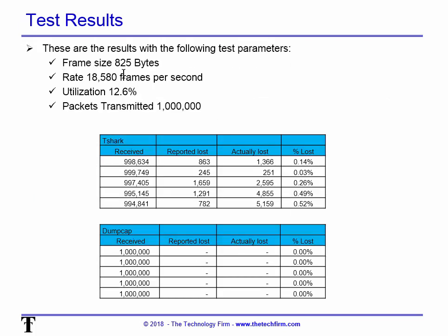Here are my test results. 825 bytes — I tried to choose something between the smallest and largest frame size — at 18,580 frames per second, or 12.6% utilization on a one-gig connection. I sent a million packets. T-Shark reported 863 dropped, but actually lost 1,366 — and that's a common theme. If your device says it lost something, it probably lost a lot more than that. Even if the reported and actual numbers are relatively close, your timings are probably going to be all messed up, which leads into analysis issues.